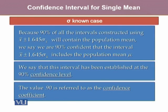Because 90% of all intervals constructed using x-bar plus or minus 1.645 sigma x-bar will contain the population mean, we say we are 90% confident that the interval x-bar plus or minus 1.645 sigma x-bar includes the population mean mu. We say this interval has been established at the 90% confidence level, and the value 90 is referred to as the confidence coefficient.